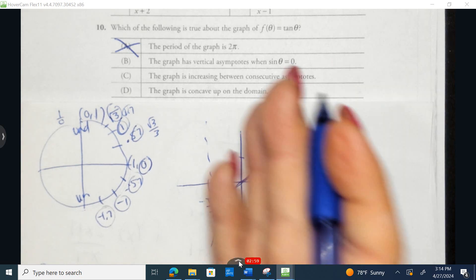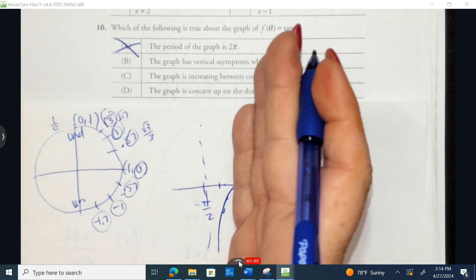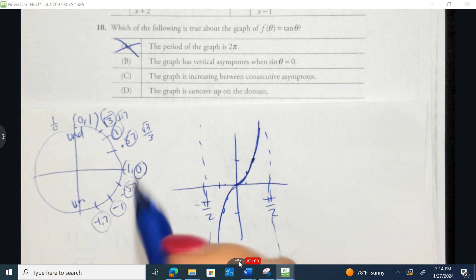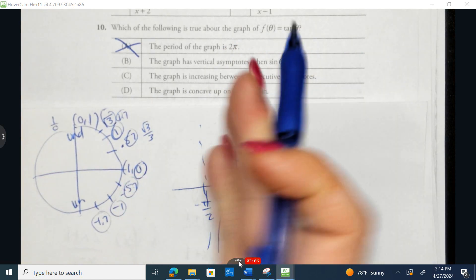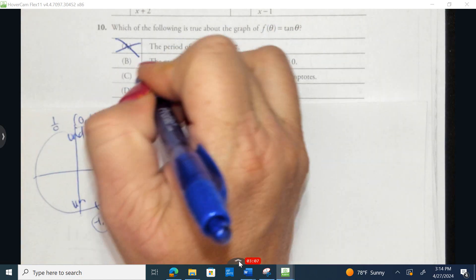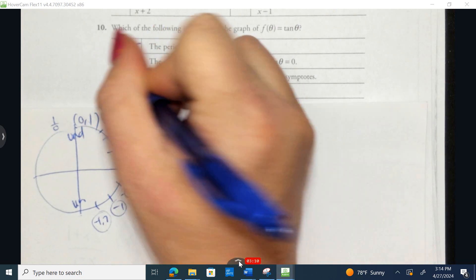So as we read x's from left to right, we can see the entire way it is increasing. So it's increasing in between consecutive asymptotes. That is true. Correct option is going to be C.